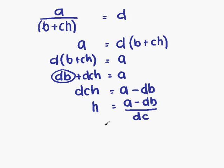What we can do now is split this into two separate fractions. The reason we want to do that is we will be able to simplify one of those as a result. So H equals A over DC minus DB divided by DC.